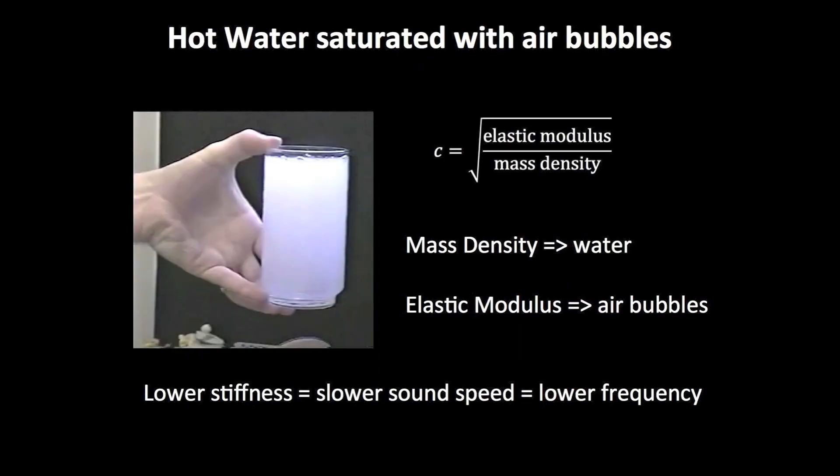Let's start with the water and lots of trapped air bubbles. The mass density of water is almost a thousand times greater than air, so the mass density of a column of water with air bubbles comes almost entirely from the water.